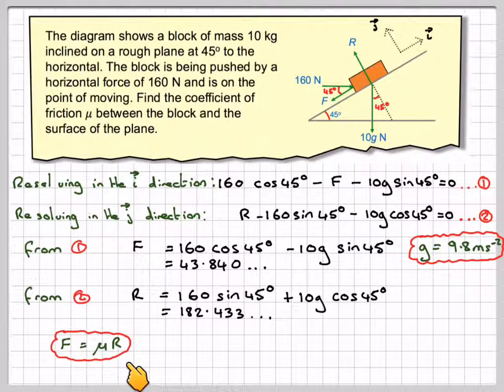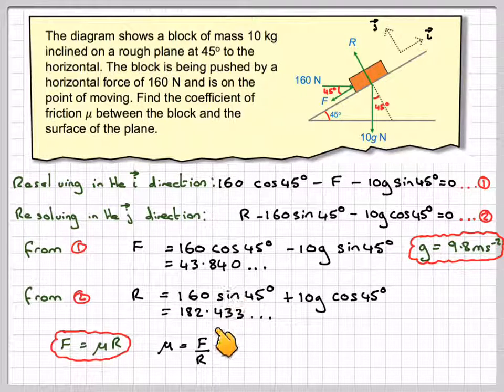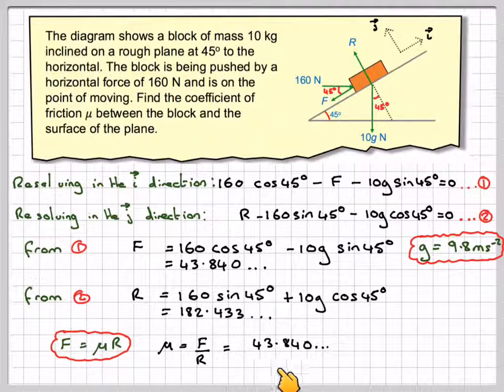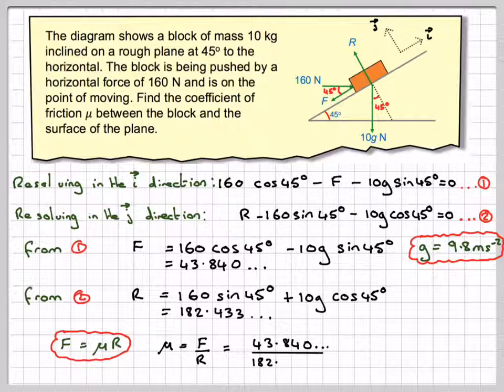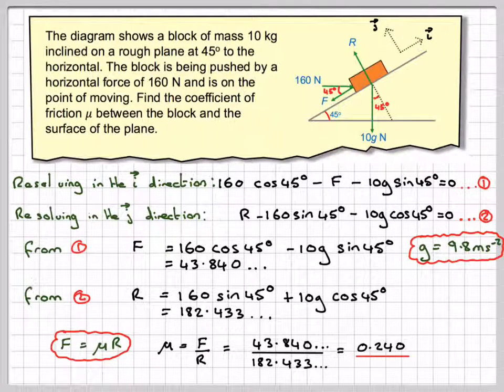So F equals μR, and therefore μ will be F over R, so this is F, this is R, so it will be 43.840 divided by 182.433, which is equal to 0.240 as the coefficient of friction of the block and the surface of the plane.